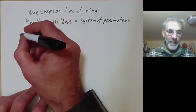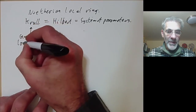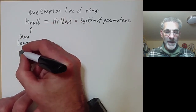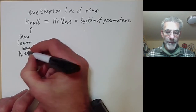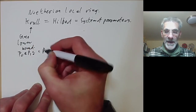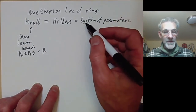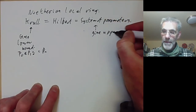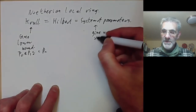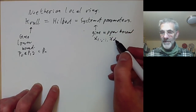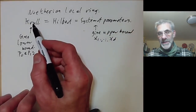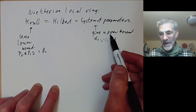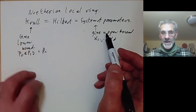This is very useful because we can switch between definitions and use whichever is easiest. For example, the Krull dimension gives an easy lower bound for the dimension of a ring — all you need is a chain of prime ideals of length n. On the other hand, if you can find a system of parameters, that gives an upper bound. It's quite hard to use Krull's definition for an upper bound, and hard to use the system of parameters definition for a lower bound, but since they're equal you can combine them.